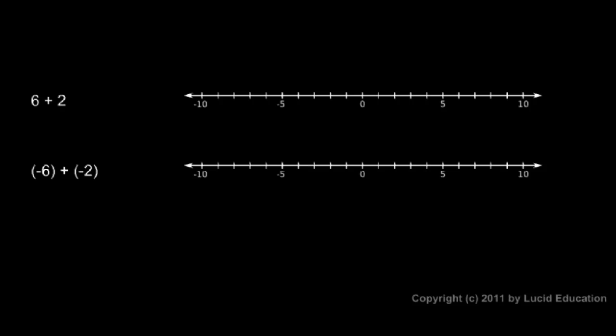When we add integers, one way to picture it is with a number line and we have a couple of examples here. 6 plus 2 in our first example and negative 6 plus negative 2 in the second example. On the number line notice that the positive numbers are to the right and the negative numbers are to the left.